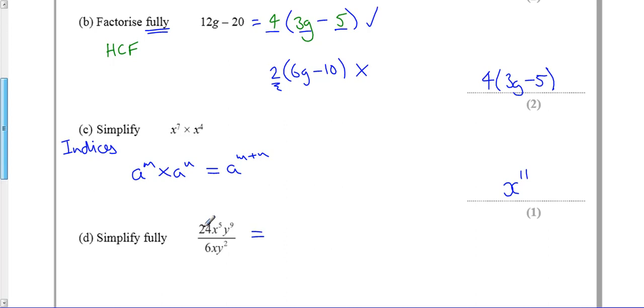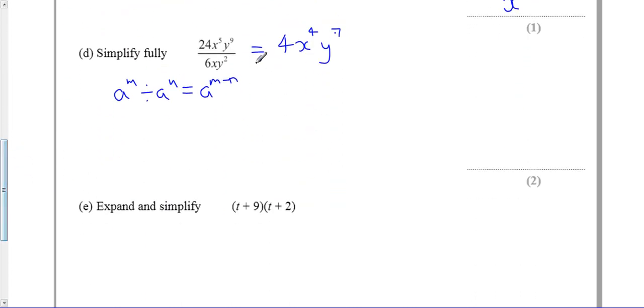There is one here where we can cancel some things out. 24 divided by 6 gives me 4. Using a similar rule to this one but with the divide, the base of the bottom numbers stay the same and I subtract the powers. So if I'm doing x to the 5 divided by x, I'm going to subtract power of 1 from power 5, gives me power 4. The same thing here - if I do the 2 from the 9, or the 9 take away 2, gives me 7. So final answer, simplified fully: 4x to the power 4, y to the power 7.